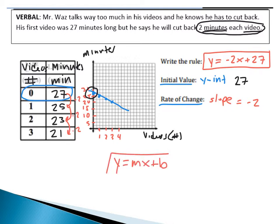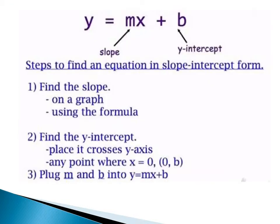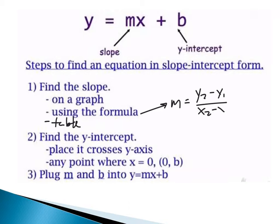So if I wanted to write this as an equation, my rule would be y equals negative 2x plus 27. This is written in slope-intercept form: y equals mx plus b. Here are the steps to write an equation in slope-intercept form. The first and most important thing is we find the slope of our line — from a table, a graph, or using the slope formula: slope equals y2 minus y1 over x2 minus x1. The goal is to be able to find the slope in different ways.